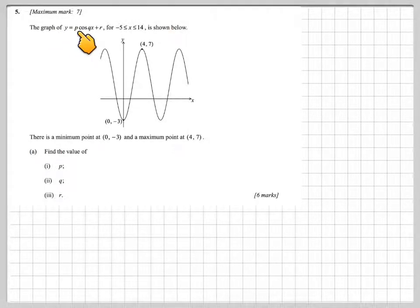The graph of y equals p cos qx plus r for x between minus 5 and 14 is shown below. Here we've got a graph. We know there's a minimum point at (0, -3) and a maximum at (4, 7). Find the value of p, q, and r.